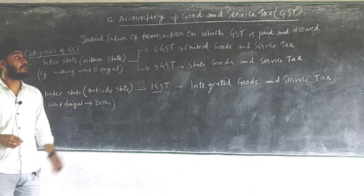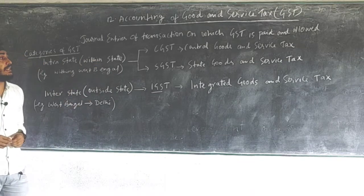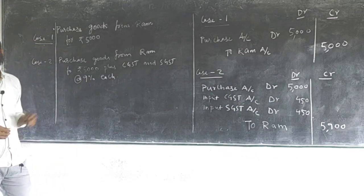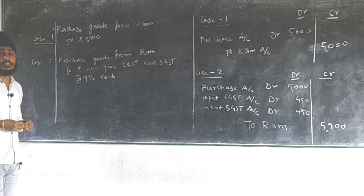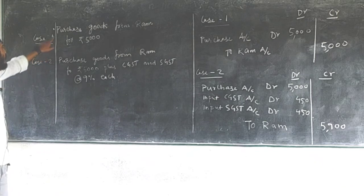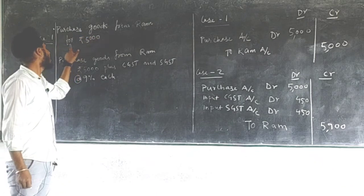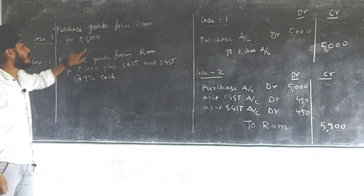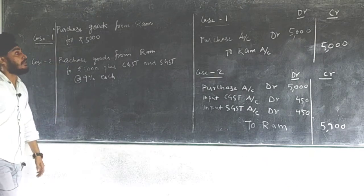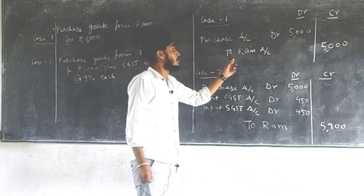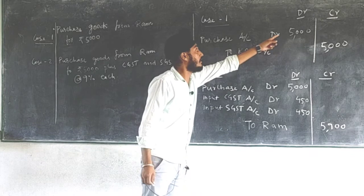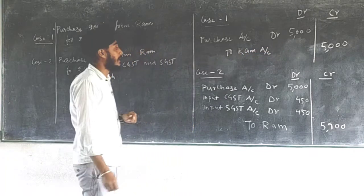Now let us see some journal entries related to GST. Case one: purchase goods from Ram for rupees 5000. The general entry for purchase of goods from Ram is — Purchase Account debit, to Ram Account — 5000 on debit side and 5000 on credit side.